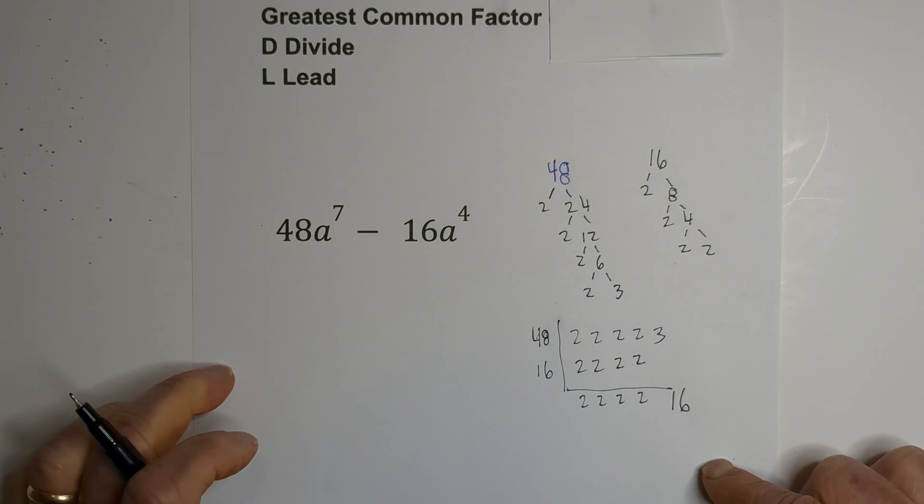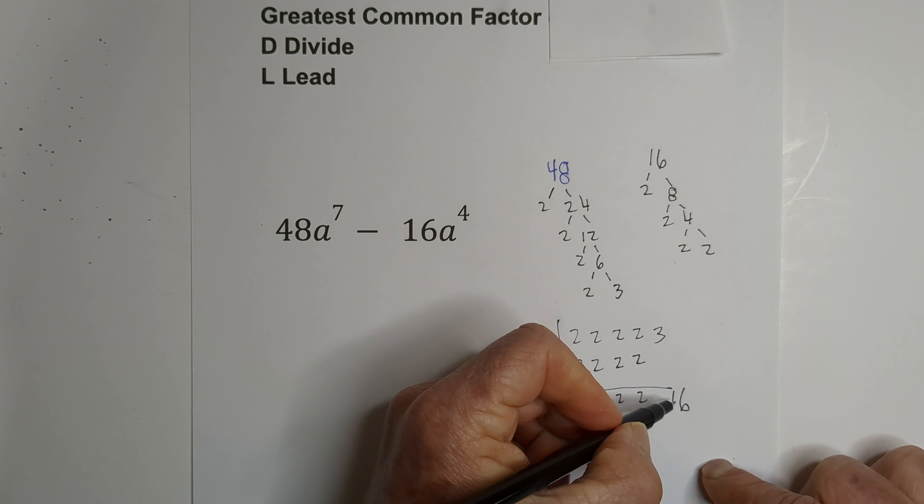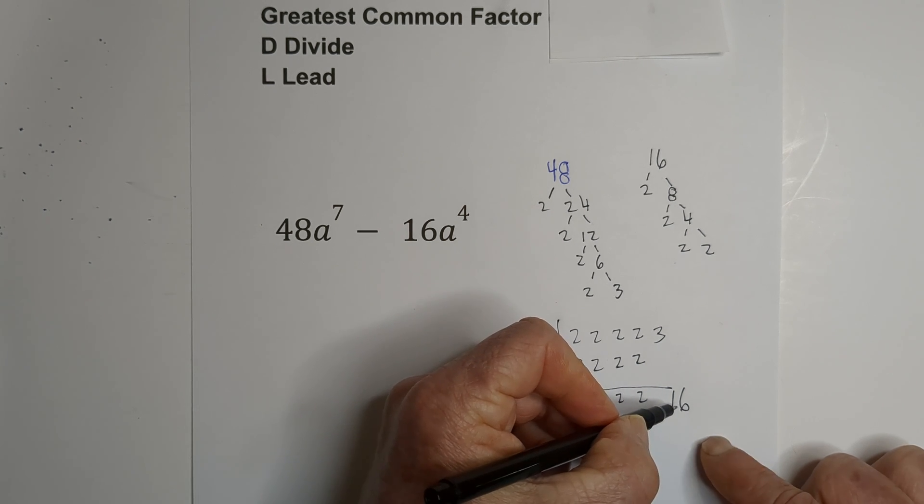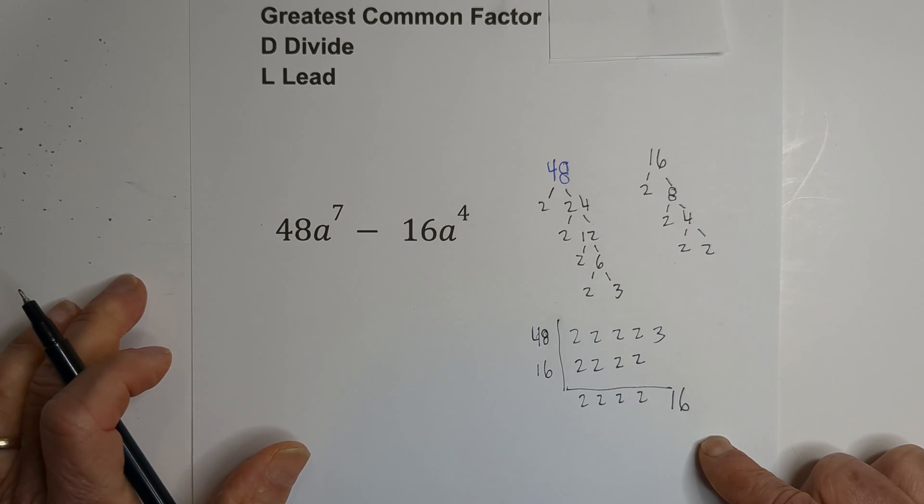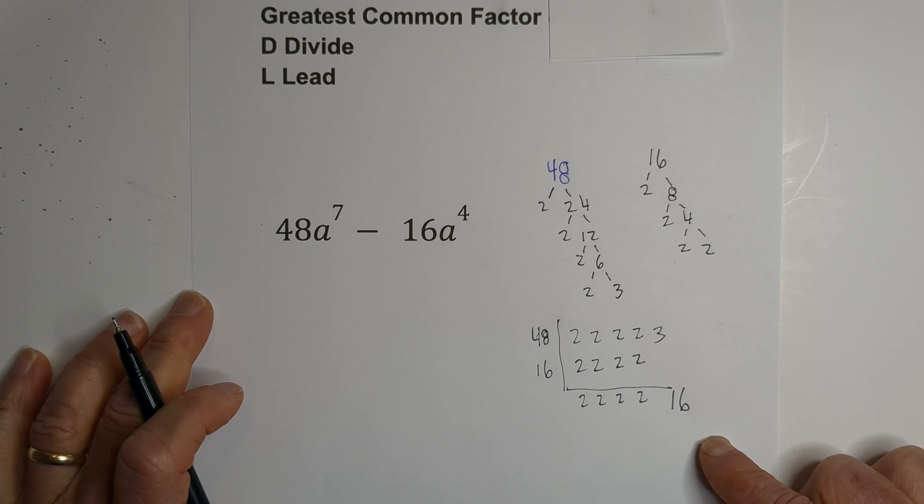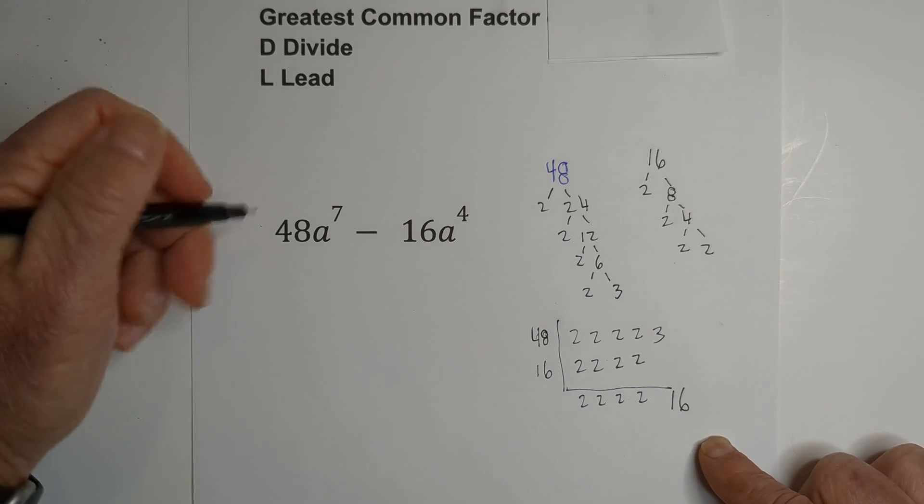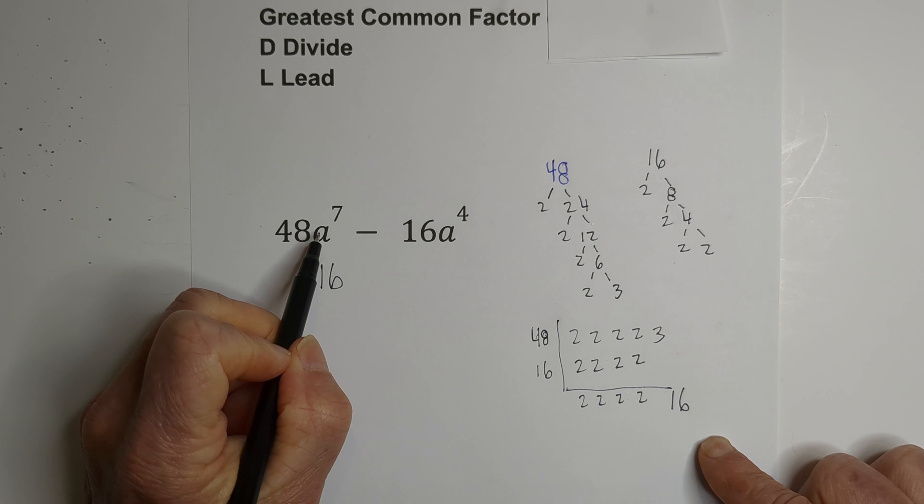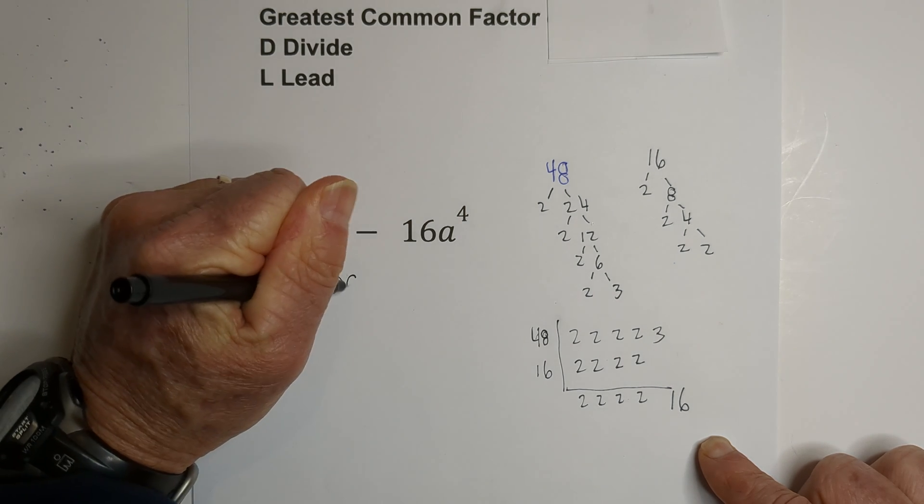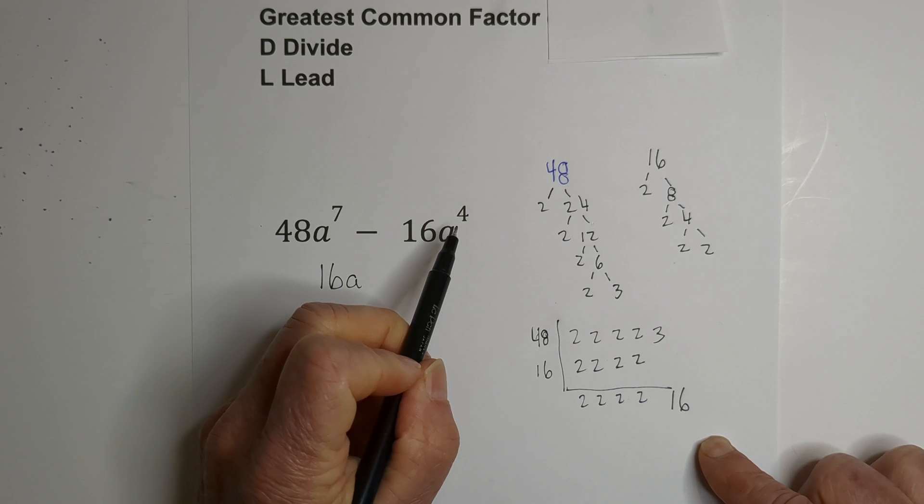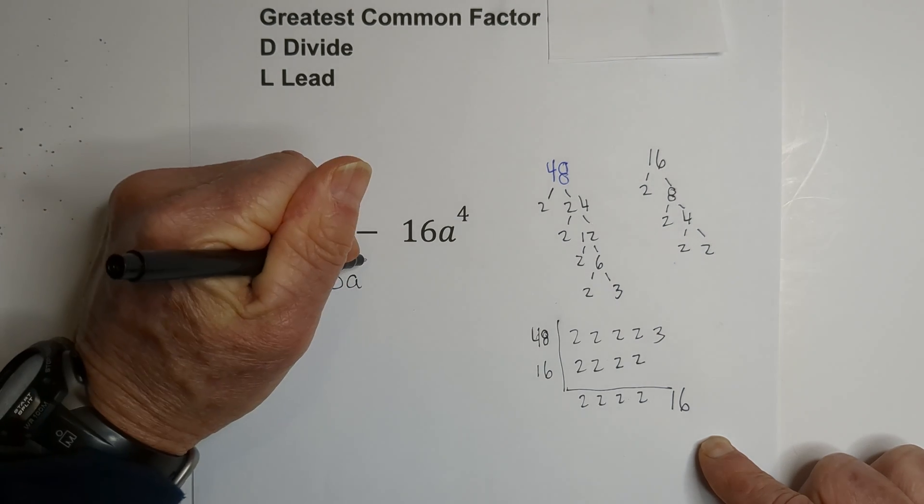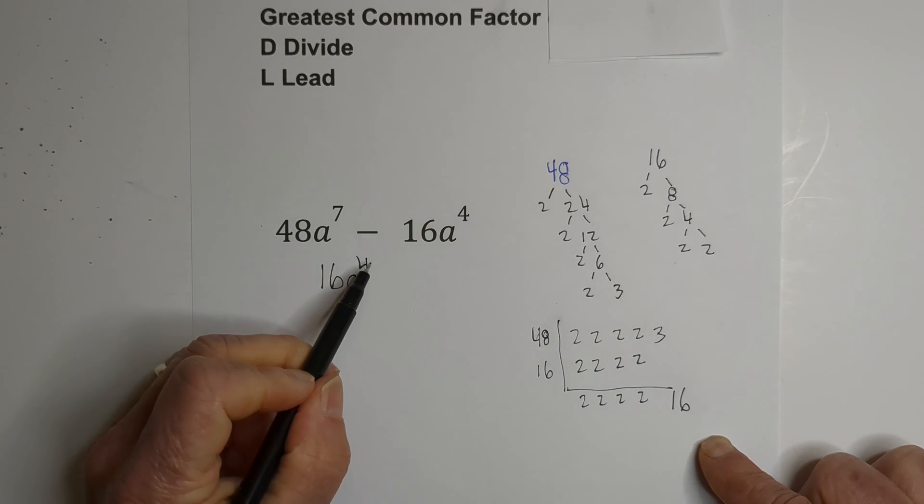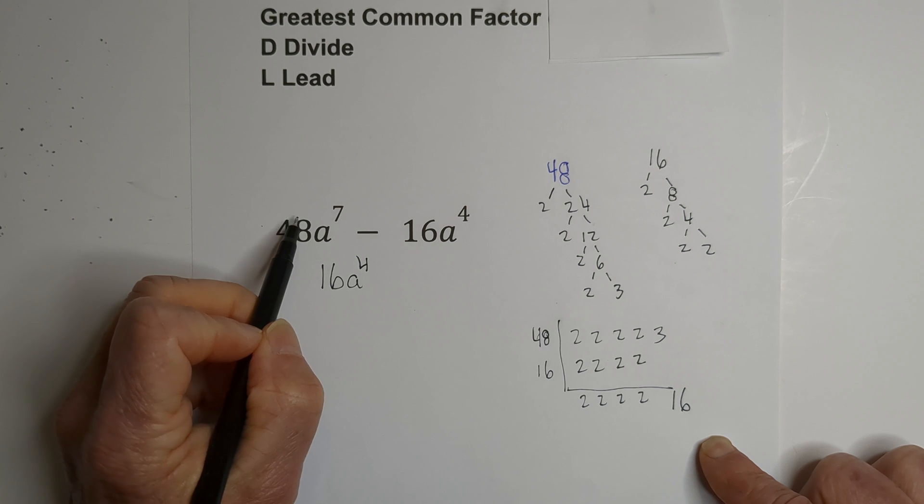Many of you could have just said the greatest common factor of the coefficients is 16, but I wanted to show how you can find that. We aren't finished yet. We look for common variables - we have a and a that's common. Then we take the smallest exponent, which is four. So now we have the greatest common factor: 16a^4.